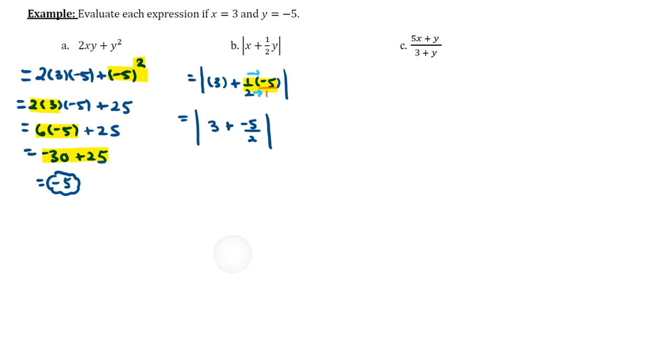If you treat the 3 as being on top of 1, what we now have inside the absolute value symbols is the addition of two fractions. So we're going to need a common denominator, or as Arnold would say, a common denominator. What that means is we're going to rewrite the 3 over 1 as 6 over 2 because that's our common denominator between the two fractions. So 6 over 2 plus negative 5 over 2.